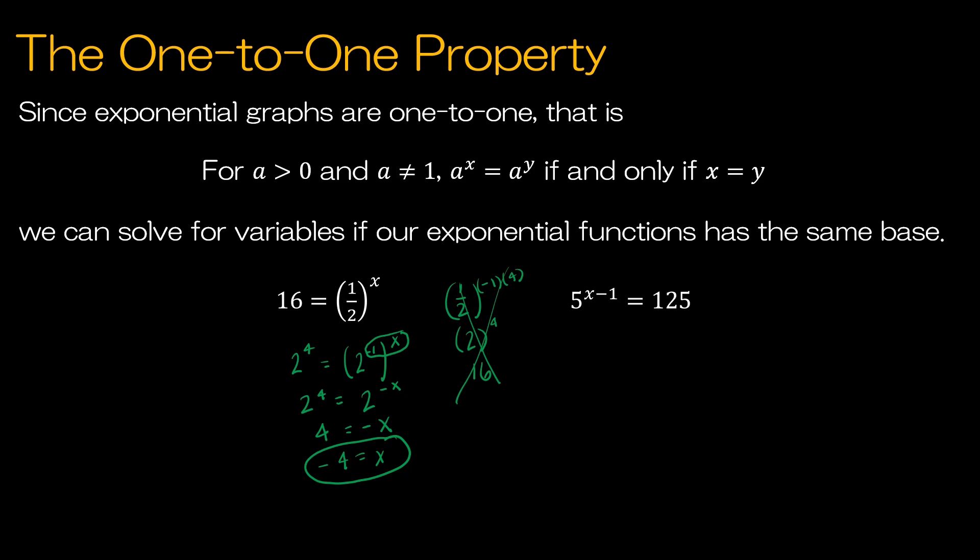Five to the x minus one is equal to 125. 125 is five times five times five or five cubed. Again, I have the same base. So I can say x minus one is equal to three. So x must be equal to four. And again, I can check that if I want. Five to the four minus one, does that equal 125? Five to the third does in fact equal 125. And so I know that I did it correctly. x is negative four for my first question and positive four for my second.